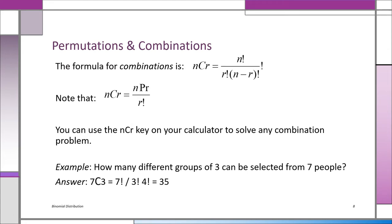The formula for combination is NCR equals N factorial over R factorial times N minus R factorial. It's almost the same as the permutation formula, except you're dividing by R factorial — so NCR equals NPR over R factorial. You have an NCR key on your calculator to solve any combination problem. For example, how many different groups of three can be selected from seven people? That's 7C3 — seven factorial divided by three factorial times four factorial — which equals 35.